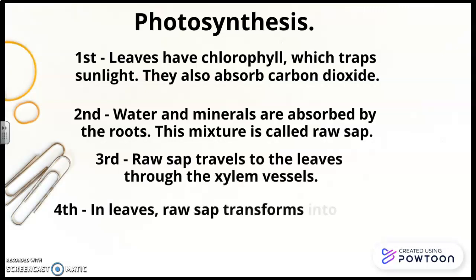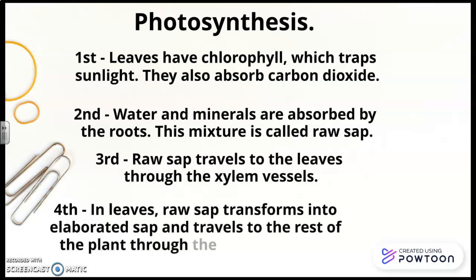Fourth, in leaves, raw sap transforms into elaborated sap, and travels to the rest of the plant through the flowing vessels.